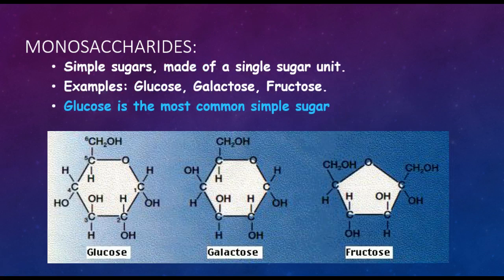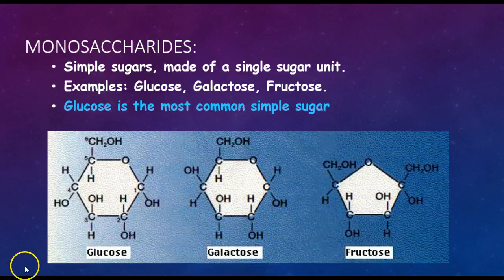Monosaccharides are simple sugars made up of a single sugar unit. Examples are glucose, galactose, and fructose. Glucose is the most common sugar, as it is found in your blood and is considered to be blood sugar.